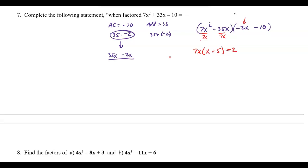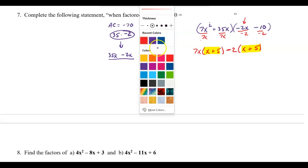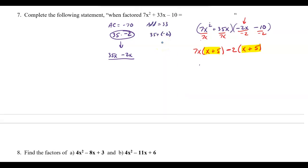For the second group, since the first term is negative, I'm going to pull out a negative. The common factor between 2 and 10 is 2, so I factor out negative 2. Dividing by negative 2: negative 2x gives positive x, and negative 10 divided by negative 2 is plus 5. Both groups give x plus 5, so factoring out that binomial is correct.